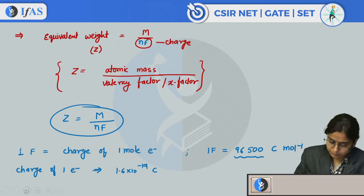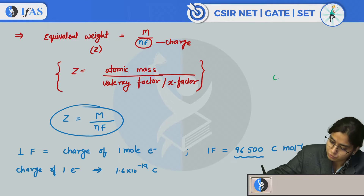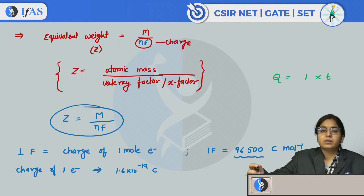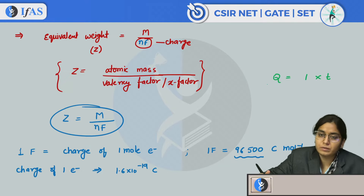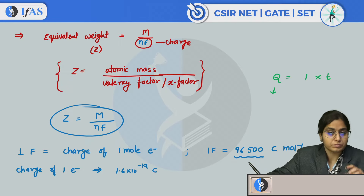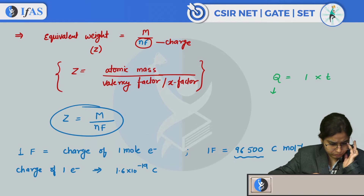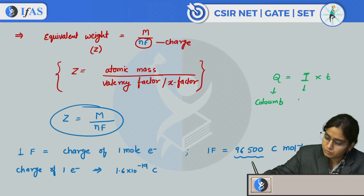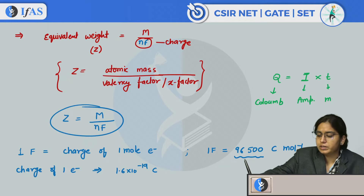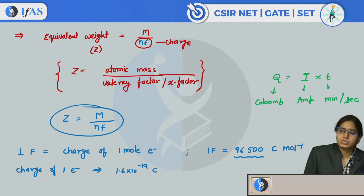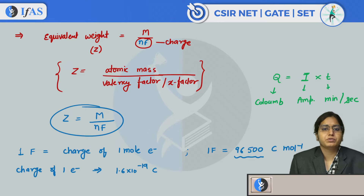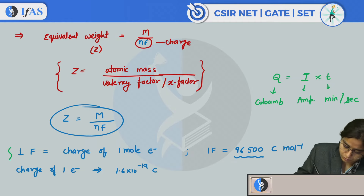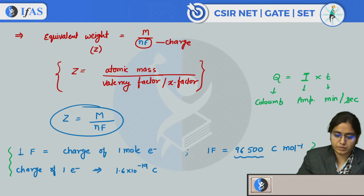Remember: Q = I × t. The unit of Q (charge) is coulombs. The unit of current I is amperes (most of the time), and time can be in seconds or minutes. Physical chemistry is all about units, so be careful with unit conversions. These small things must be noted as we move forward.